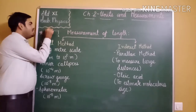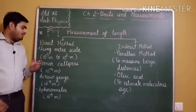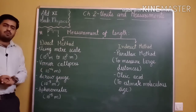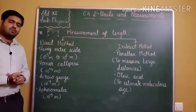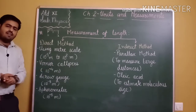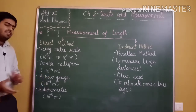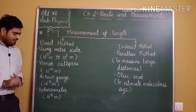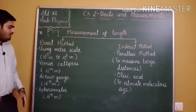The next instrument is the Vernier caliper. Using a Vernier caliper, we can measure the smallest length of 10 to the power minus 4 meter — this is its least count. You will use this instrument in the standard 11 laboratory practical. Next is the screw gauge: its least count is 10 to the power minus 5 meter. The spherometer also has a least count of 10 to the power minus 5 meter.